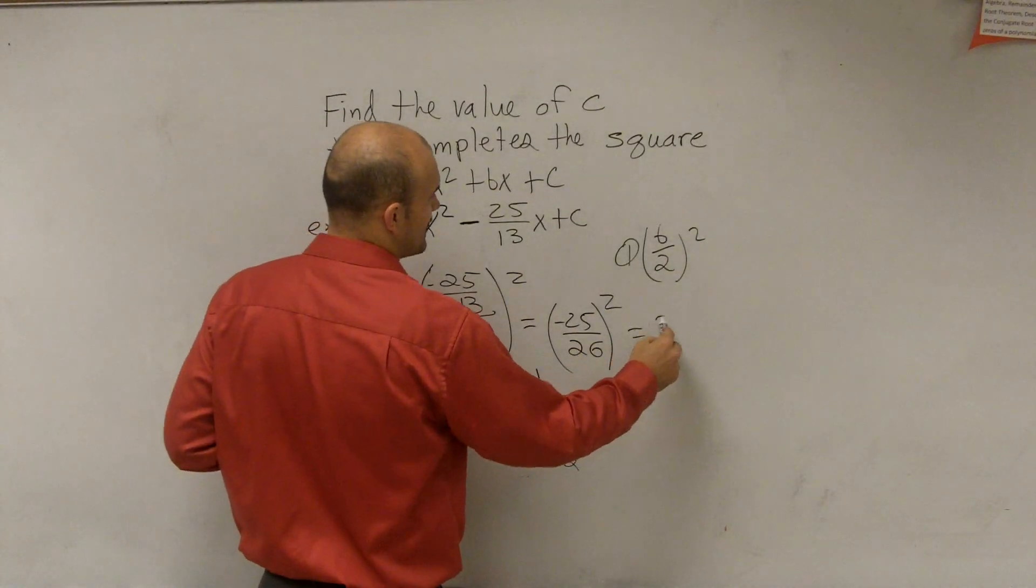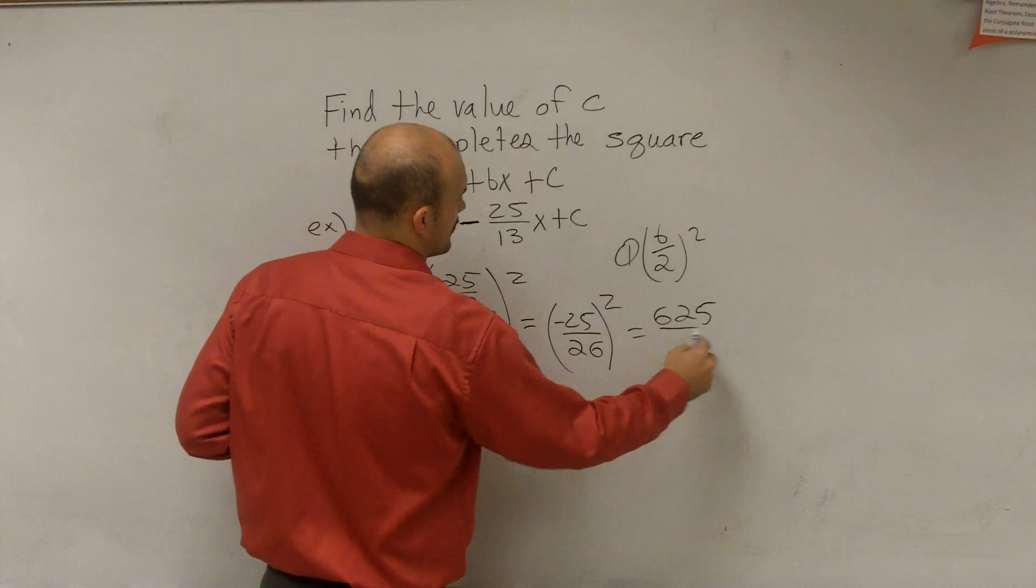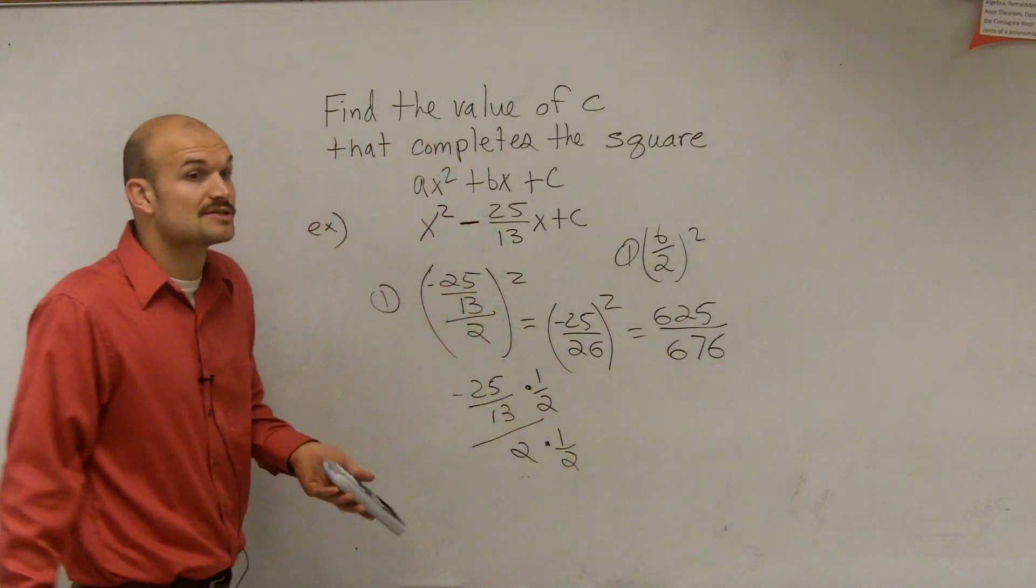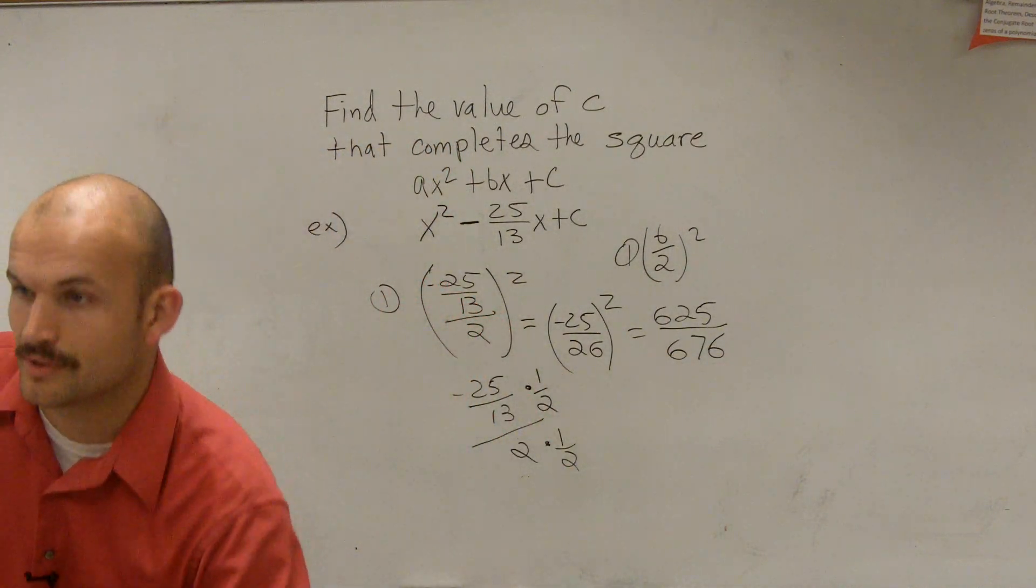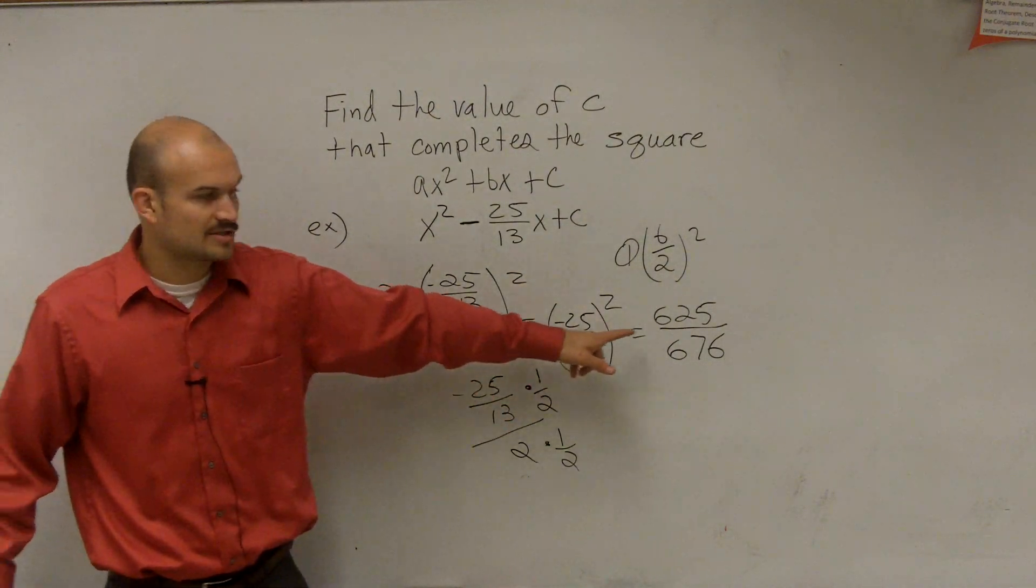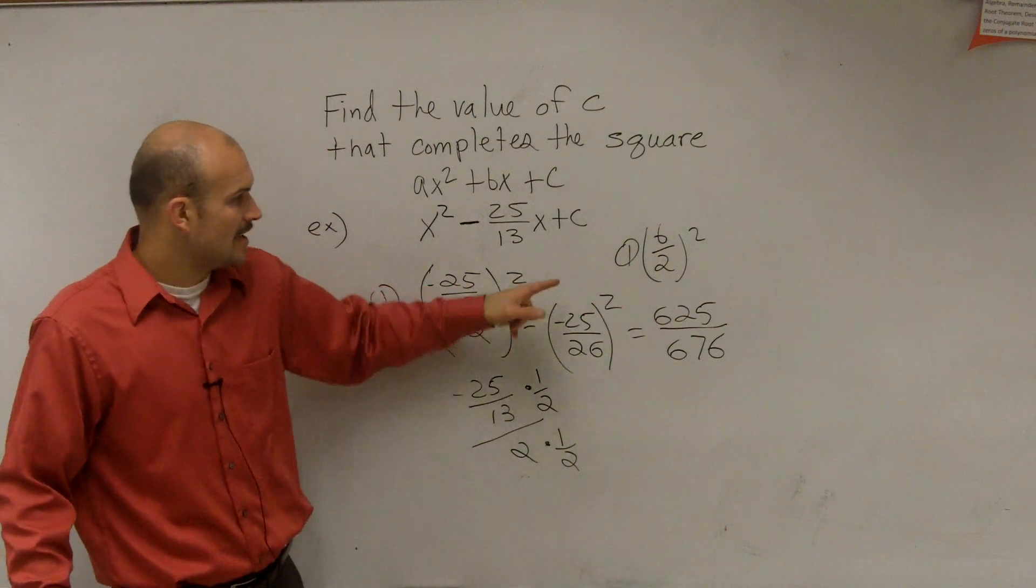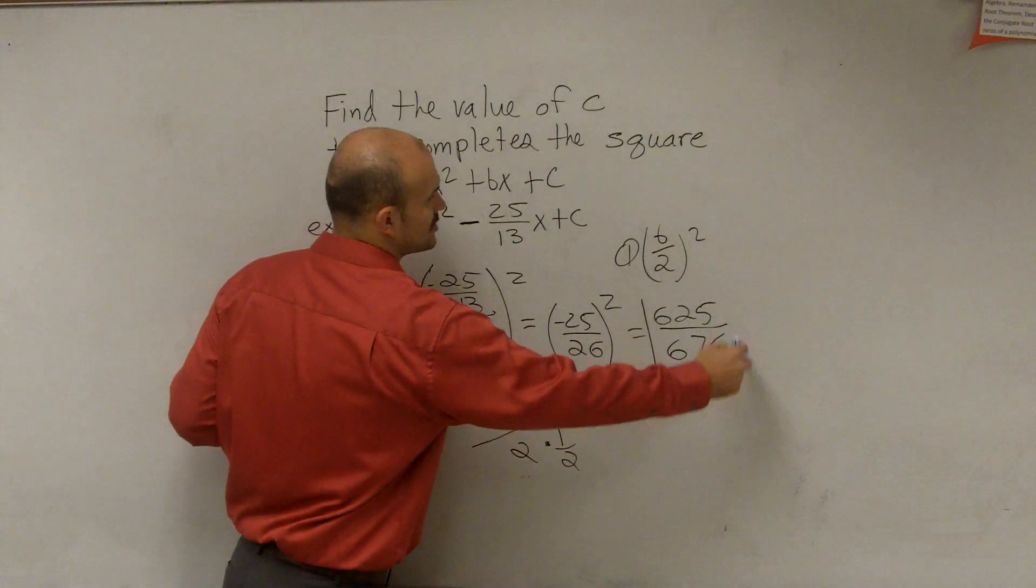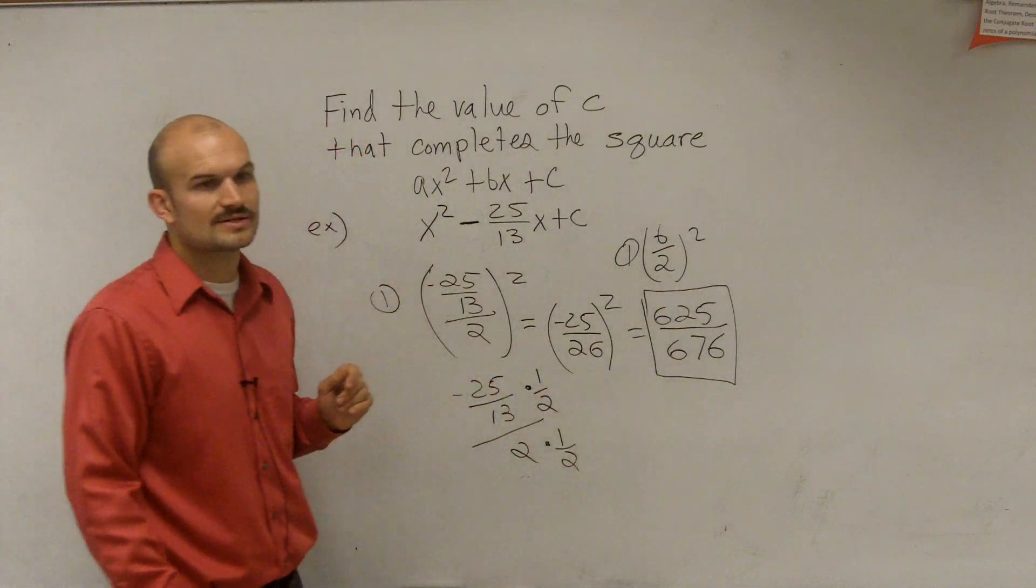So 25 times 25 is 625 divided by, I did this one before, 676. Since it's squared, you're not going to have a negative number. You're squaring a negative number, so it's going to become positive. So your value of c that completes the square is going to be 625 over 676.